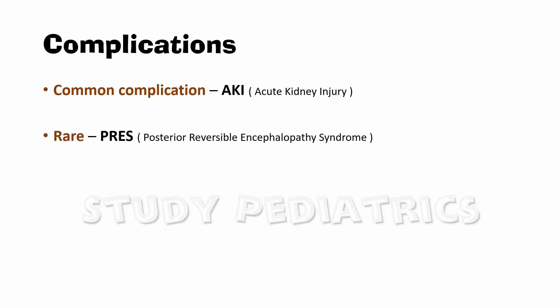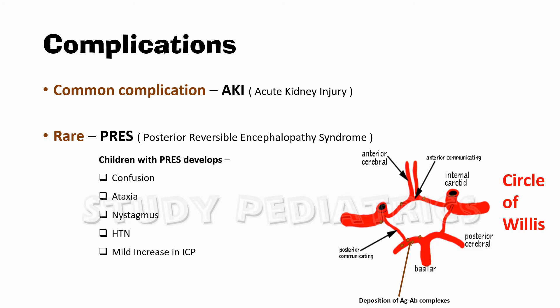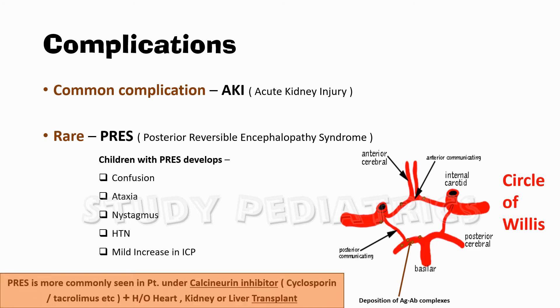Another rare condition associated with nephritic syndrome is PRES, or Posterior Reversible Encephalopathy Syndrome, a clinical and radiological condition showing signs of neurological damage. Children with PRES syndrome may develop confusion, ataxia, nystagmus, hypertension, or mild increase in ICP. Although the exact pathophysiology is unknown, some attribute it to hypertensive encephalopathy or deposition of immune complexes in the circle of Willis. PRES is more associated with patients under calcineurin inhibitors or with a history of heart, liver, or kidney problems or transplantations.